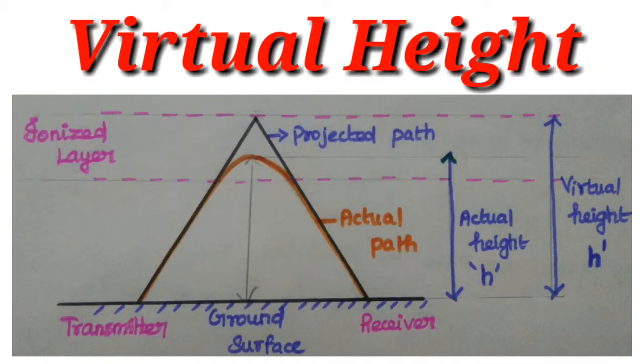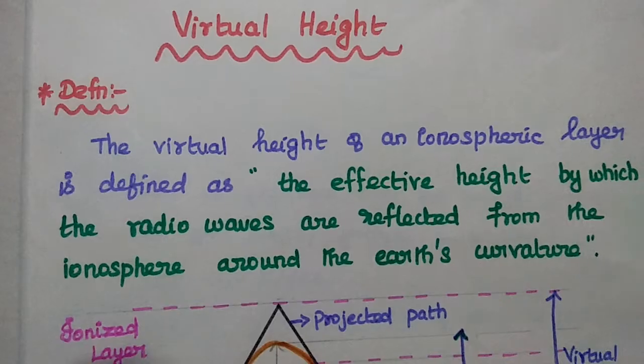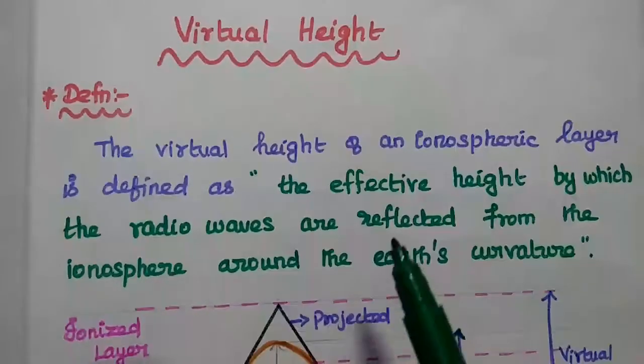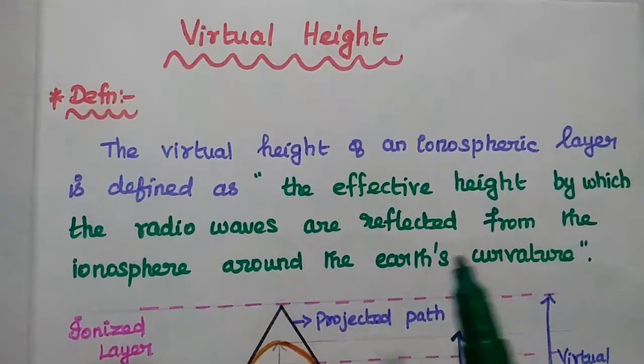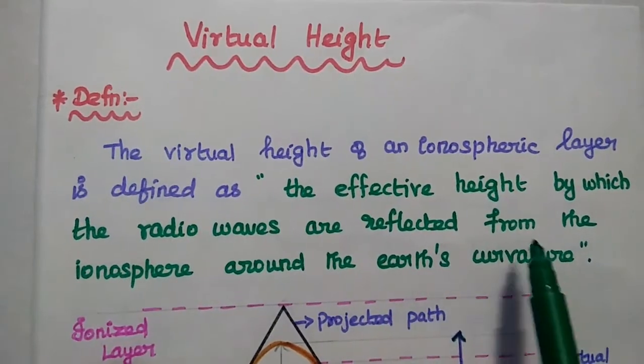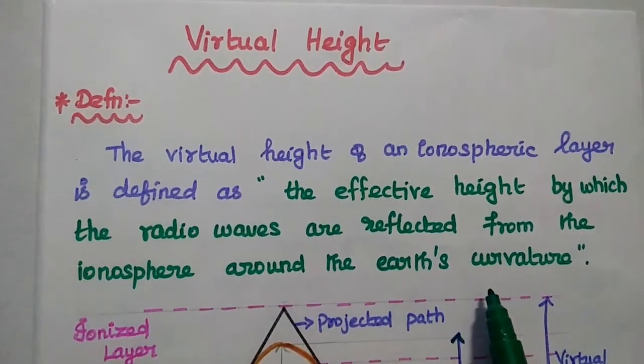Dear students, now we are going to discuss virtual height of an ionospheric layer. Virtual height is defined as the effective height by which the radio waves are reflected from the ionospheric layer around its curvature.